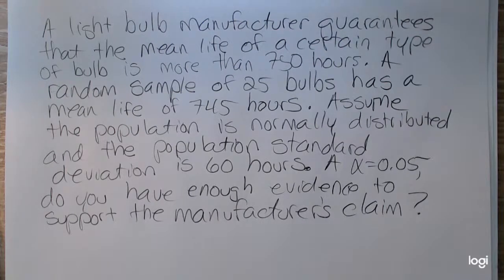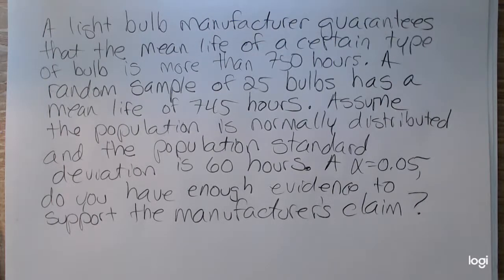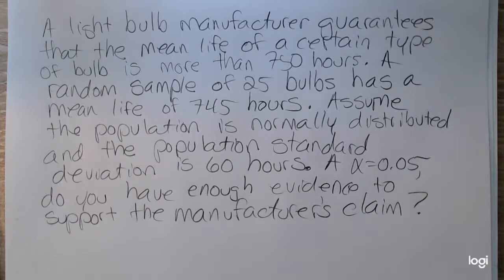In this example, I'd like to do a hypothesis test for a population mean single sample for a right-tailed or upper-tailed test. This is going to be the situation where sigma is known, so this will be a Z test. A light bulb manufacturer guarantees that the mean life of a certain type of bulb is more than 750 hours. A random sample of 25 bulbs has a mean life of 745 hours. Assume the population is normally distributed and the population standard deviation is 60 hours. At alpha equal 0.05, do you have enough evidence to support the manufacturer's claim?